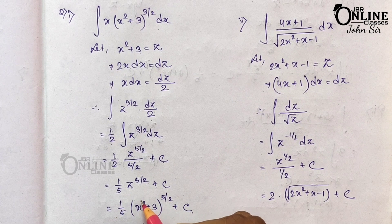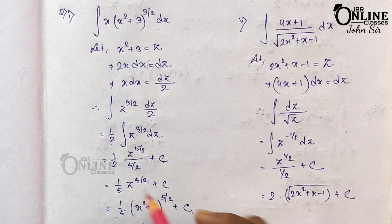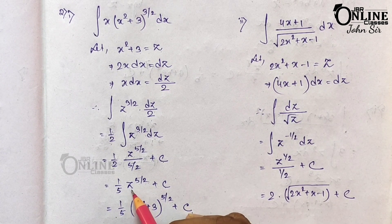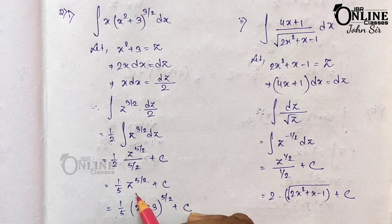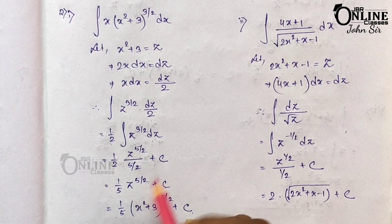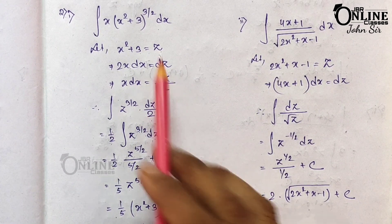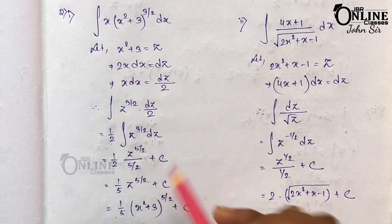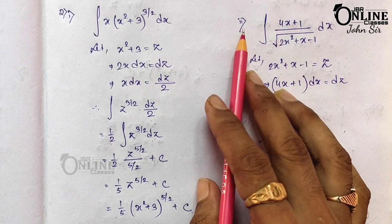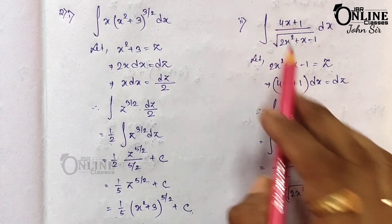Remember: in exams, always substitute back the original value at the end. If you leave your answer in terms of z, you will not get full marks — you may even get zero. So always write the final value replacing z with the expression you originally substituted.